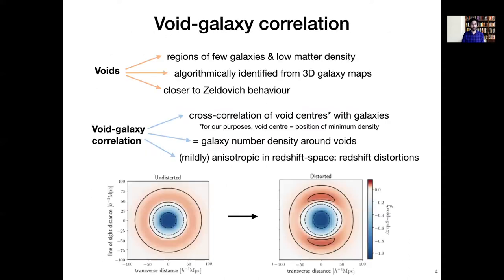So a very brief introduction to what voids and the void galaxy correlation are. As I'm sure everybody intuitively understands and knows, voids are just regions, large regions of space which have very few galaxies and correspondingly low total matter density. And we identify these using our wonderful 3D galaxy maps using a variety of algorithms. Now because voids have a low density and a lower density contrast, they are therefore a lot closer to Zel'dovich behavior, and that's very useful, as we will see.